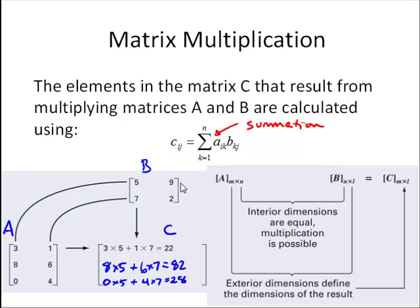Moving to the second column, we use the 9 and the 2. So these two columns, these two elements to generate the second column. So for example, the first element in the second column of C would be 3 times 9, or 27, plus 1 times 2. So that's 29. The next one would be 8 times 9, which is 72, plus 6 times 2, which is 12. So that would be 84. And the third element would be 0 times 9, which is 0, plus 4 times 2, which is 8.